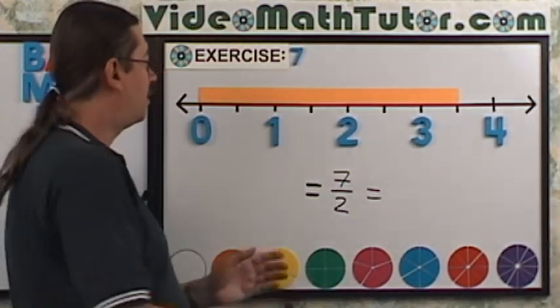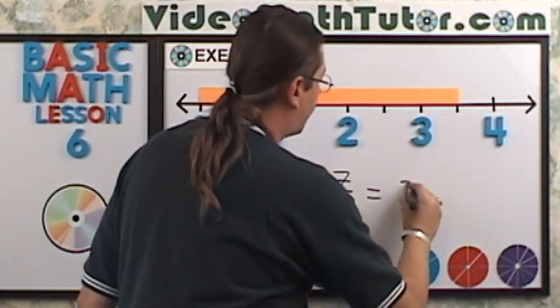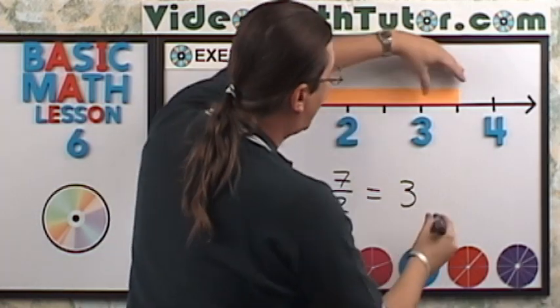What about the mixed number? Well, we have one whole unit, two, three. And then we have, see, we have half left over. So it's going to be three and one half.